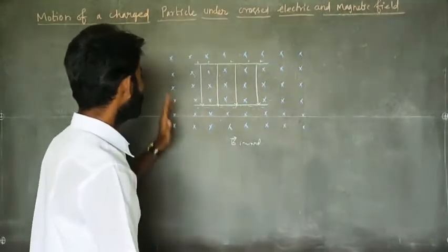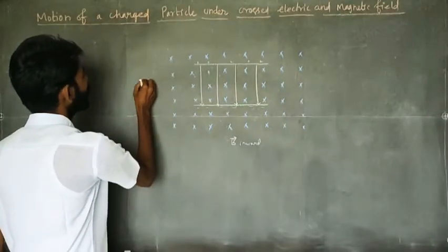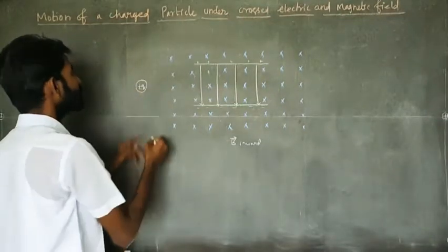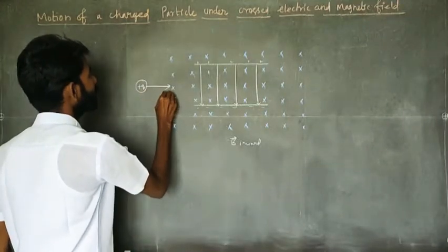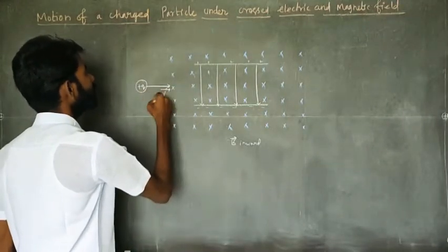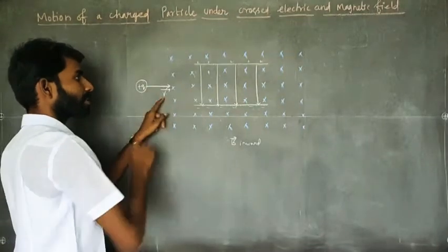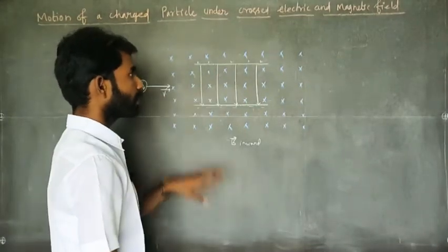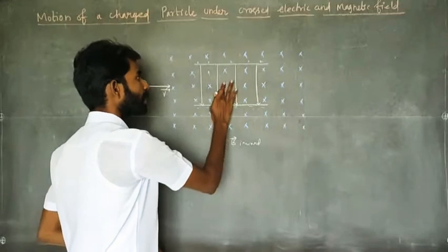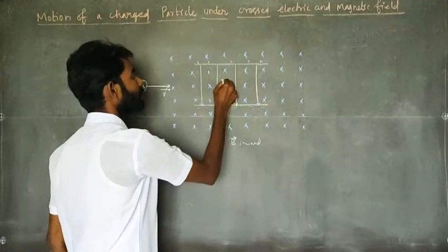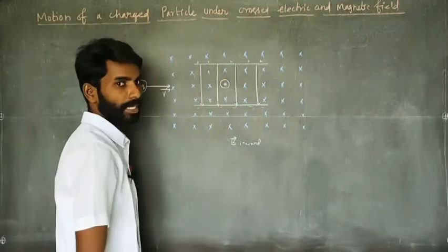Now, what do we do? A charged particle — a positively charged particle — enters here with velocity v, in this direction, entering the region. Suppose the charge here is a positive charge.